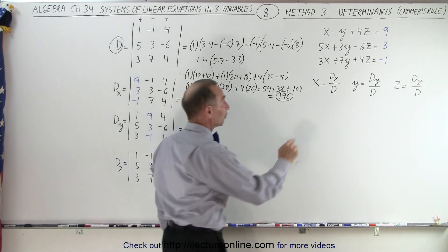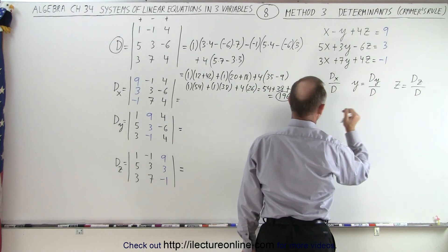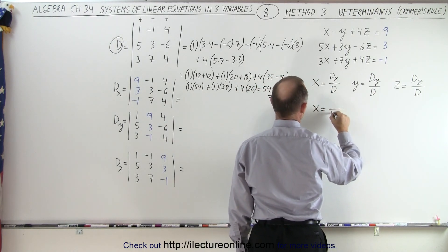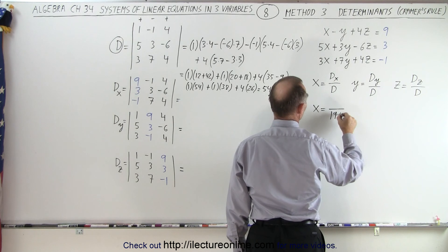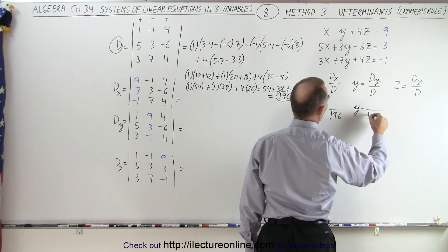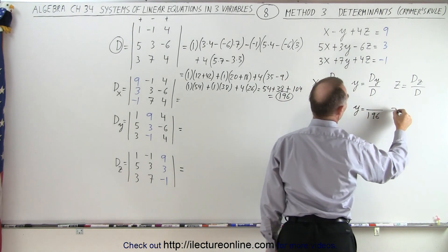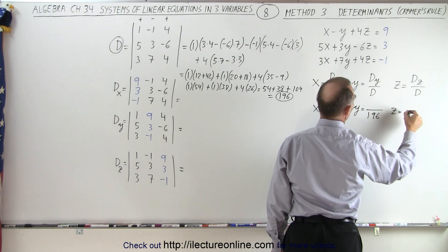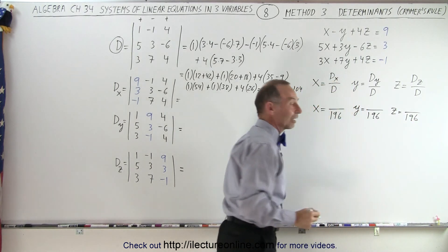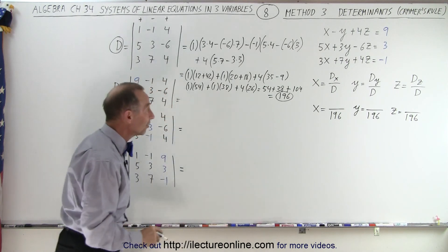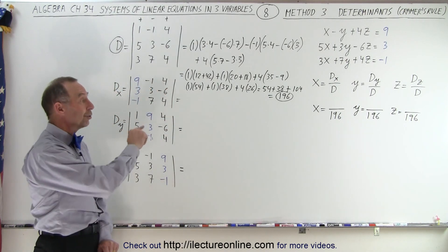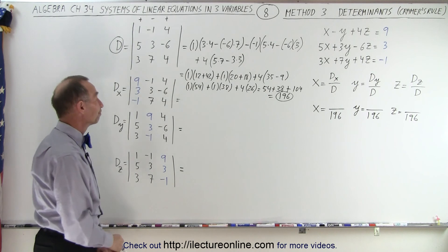Which means that if I'm going to find the values for x, y, and z, I get x is equal to some number divided by 196. Y is going to be equal to some number divided by 196. And Z is going to be some number divided by 196. So that's how I find x, y, and z — I've already got the denominator, now I need to know the three numerators.